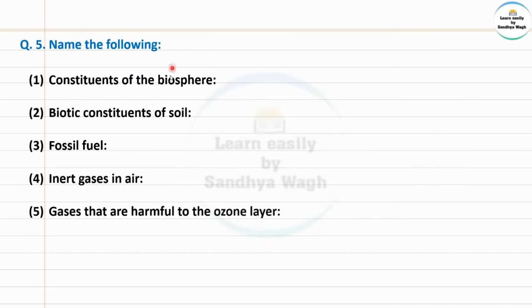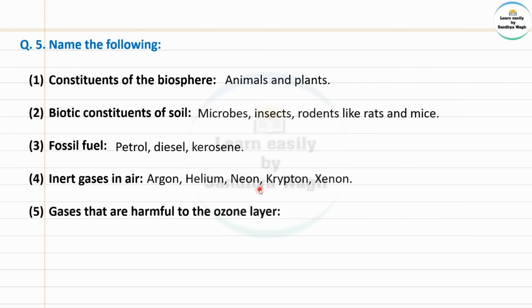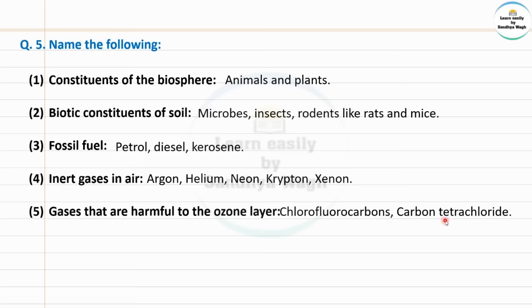Next question: Name the following. Constituents of the biosphere — animals and plants. Biotic constituents of soil — microbes, insects, rodents like rats and mice. Fossil fuel — petrol, diesel, kerosene. Inert gases in air — argon, helium, neon, krypton, xenon. Gases that are harmful to the ozone layer — chlorofluorocarbons and carbon tetrachloride.